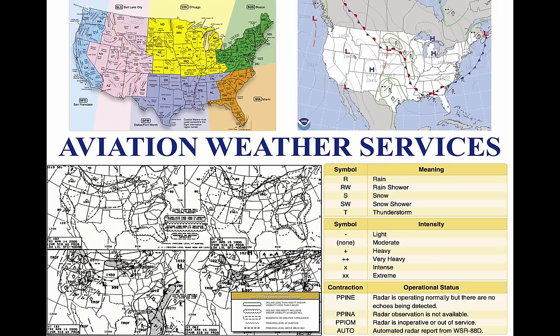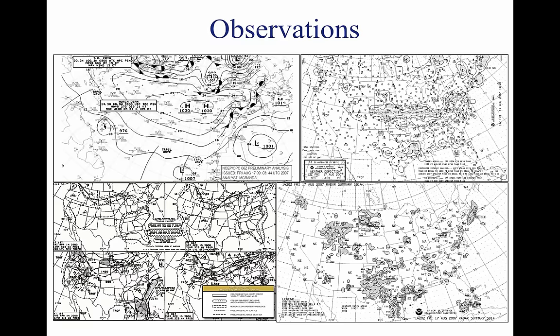Tutorial 12: Aviation Weather Services. This lesson will cover aviation weather services. Through a complex system of weather services, government agencies, and independent weather observers, pilots and other aviation professionals receive the benefit of this vast knowledge base in the form of up-to-date weather reports and forecasts. These reports and forecasts enable pilots to make informed decisions regarding weather and flight safety before and during a flight. There are four types of weather observations: surface, upper air, radar, and satellite.